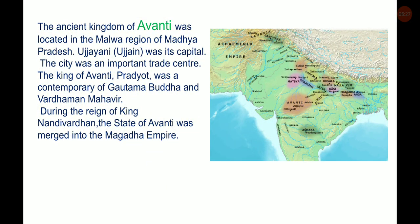The ancient kingdom of Avanti was located in the Malwa region of Madhya Pradesh. Ujjaini was its capital and an important trade centre. The king of Avanti, Pradyota, was a contemporary of Gautama Buddha and Vardhamana Mahavira. During the reign of King Nandivardhana, the state of Avanti was merged into the Magadha empire.